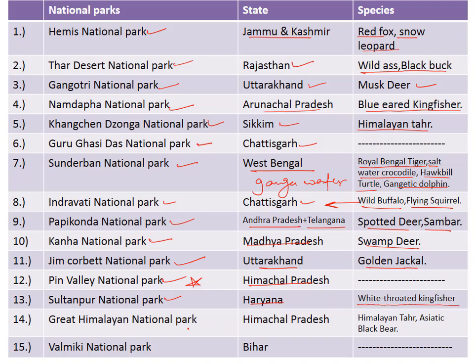The Great Himalayan National Park is situated in the state of Himachal Pradesh and is famous for the Himalayan tahr and Asiatic black bear. Do not be confused — despite the name, it is situated in Himachal Pradesh, not Jammu and Kashmir. Next is Valmiki National Park in the state of Bihar.